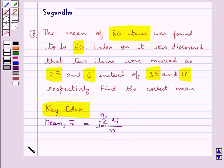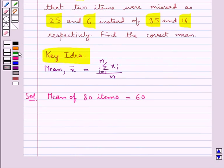Now let's see the solution. The mean of 80 items is 60. That is, we are given x̄ = 60 and n = 80. So we have 60 = (Σxi, i = 1 to 80) / 80.